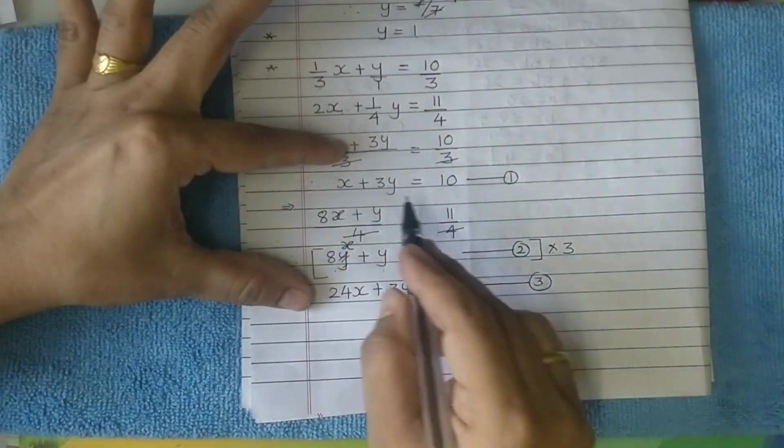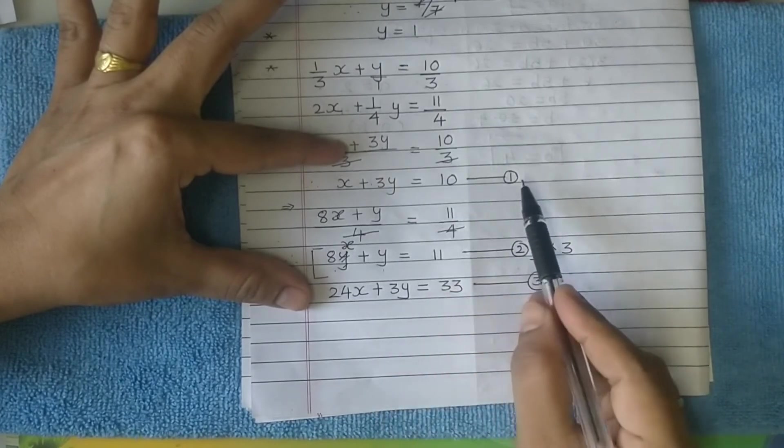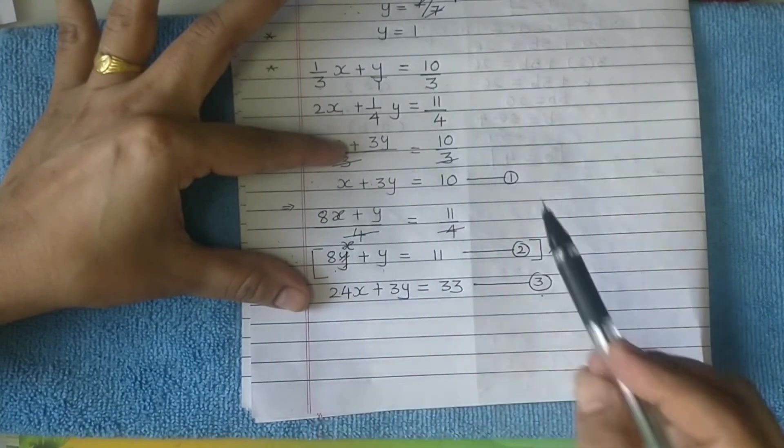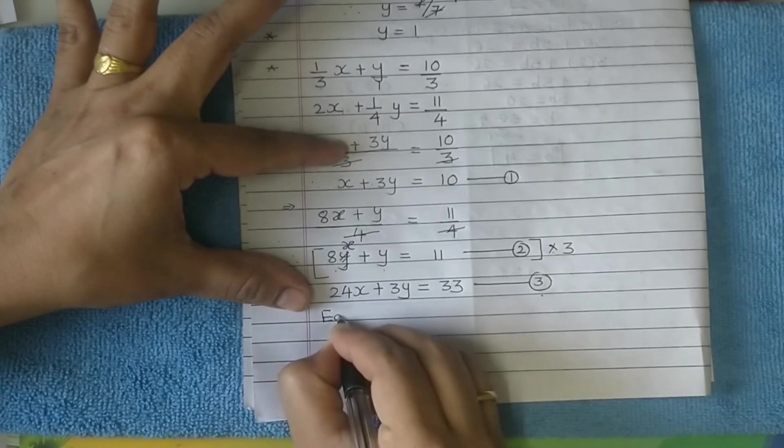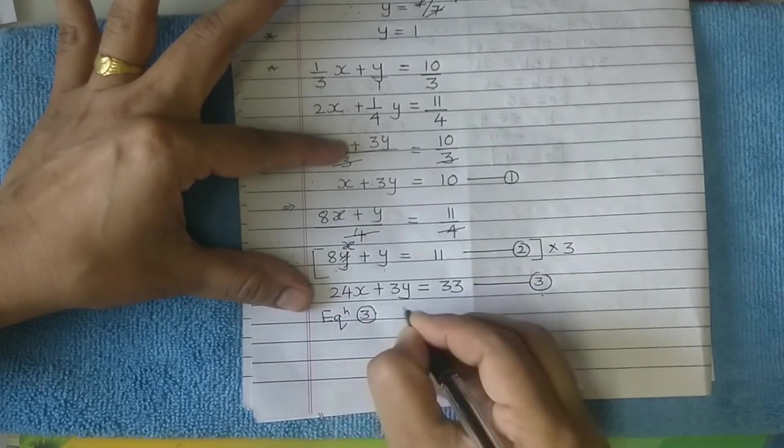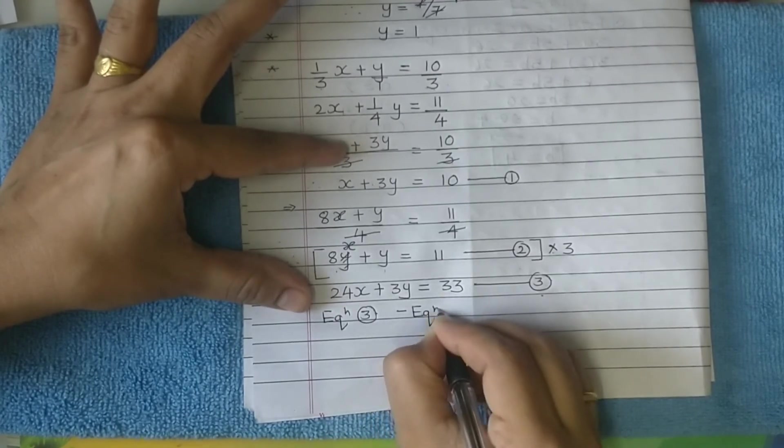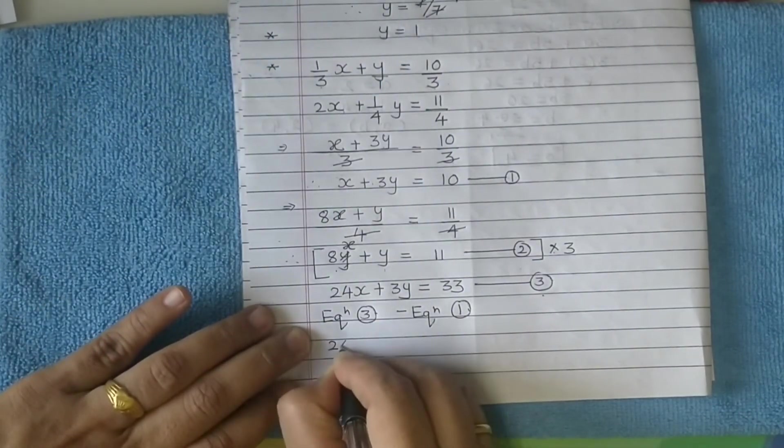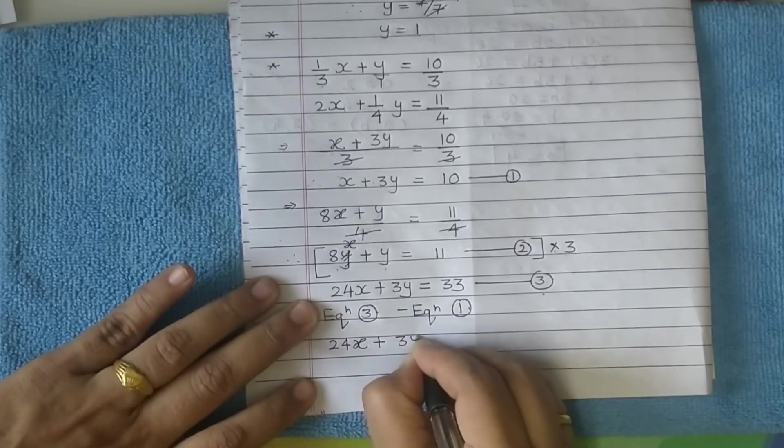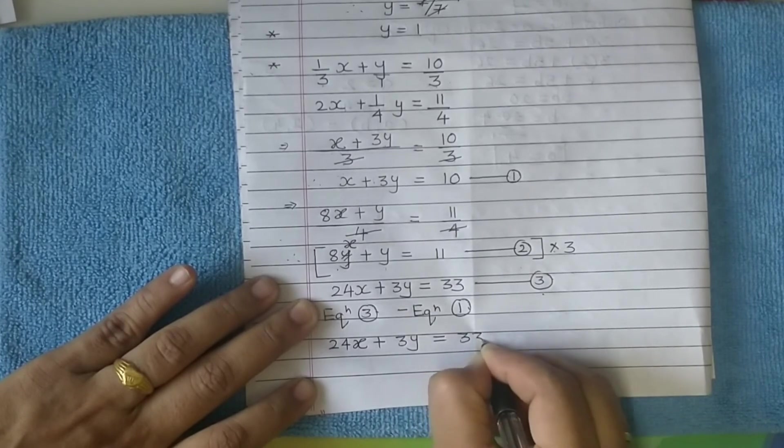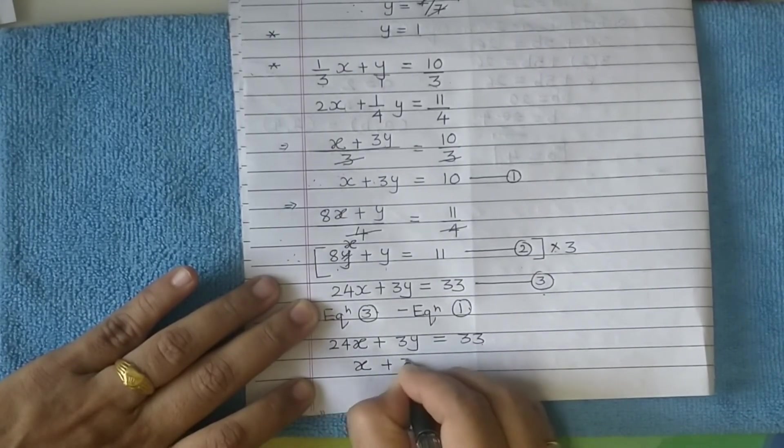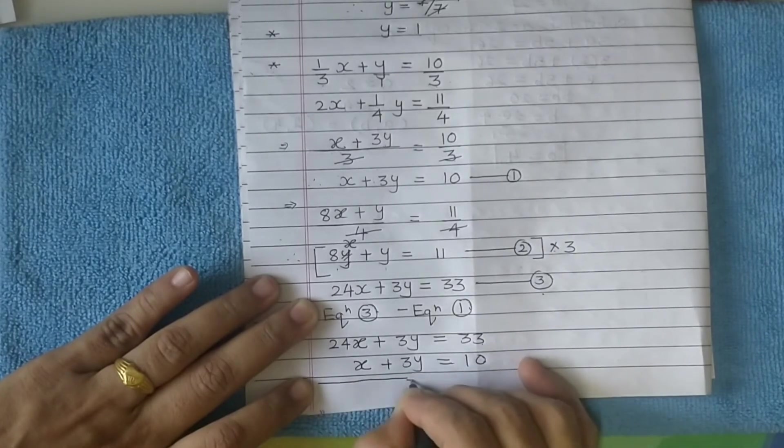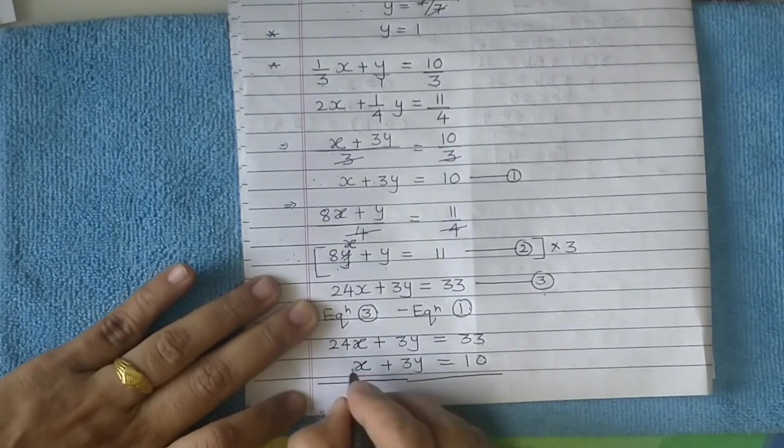Now, equation 1 and 3 we are going to work with. You can have equation 1 minus equation 3, or you can have a look - 24x minus x. So we can go this way. We can plan, look at it very carefully and plan. I'll do equation 3 minus equation 1. I hope you have understood why I changed this. So what do I get here? 24x plus 3y equals 33. Below that, write x plus 3y equals 10. Since you are subtracting, change the sign of the second equation. No sign, make it negative. Positive becomes negative. No sign again, it becomes negative.